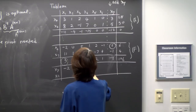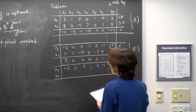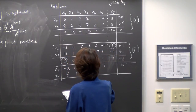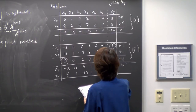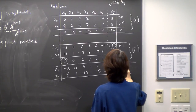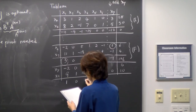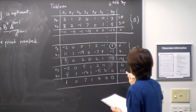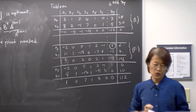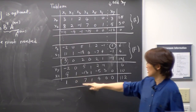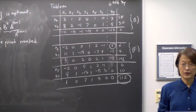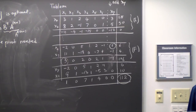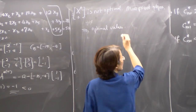After the pivot step, the new row for x7 is: 0, 5, 1, 2, -1, 1 | 6. The row for x2 is updated to: 9, 1, -13, 1, -5, 3, 0 | 10. The objective row becomes: 0, 1, 7, 1, 4, 0, 0 | 112. All coefficients in the C* row are non-negative, so this is the optimal value: z = 112.